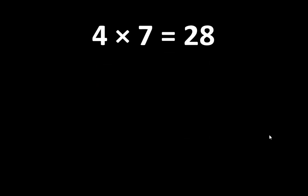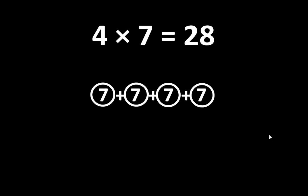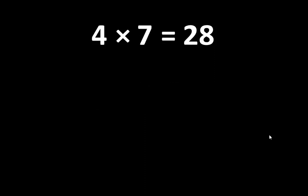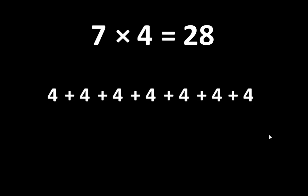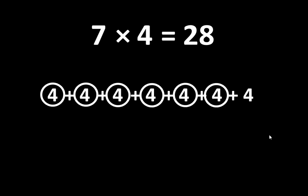So we can think of 4 x 7 as 4 groups of 7. You may recognize this as repeated addition. If we count the groups of 7, we can see that there are 1, 2, 3, 4 groups of 7, and the total of 4 groups of 7 is 28. And if 4 x 7 is equal to 28, we also know that 7 x 4 is equal to 28. So we can think of 28 as 7 groups of 4. If we count the groups of 4, we can see that there are 1, 2, 3, 4, 5, 6, 7 groups of 4, which is equal to 28.